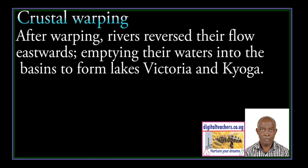After warping, rivers reversed their flow, emptying their waters into the basins to form Lake Victoria and Lake Kyoga, as illustrated by the diagrams below.